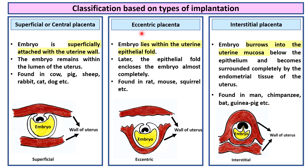Eccentric placenta. In eccentric placenta, the embryo lies within the uterine fold. This is the epithelial fold of the uterine wall. Later, the epithelial fold encloses the embryo almost completely. This is found in rat, mouse, squirrel, etc.